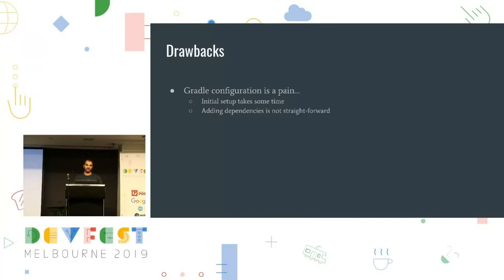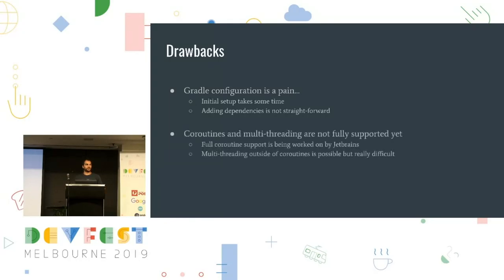The second big drawback: coroutines are not supported on iOS right now. In your Kotlin code you'd use coroutines almost everywhere, and Ktor uses coroutines heavily. But that's not supported on iOS, so you have to use hacks. Once coroutines are supported, it will make everything much easier. Multi-threading is also part of that challenge — on Kotlin Native, if you want to change threads, you have to freeze your objects to ensure they can be used on another thread. But that's something you usually don't have to handle yourself — it's done for you.